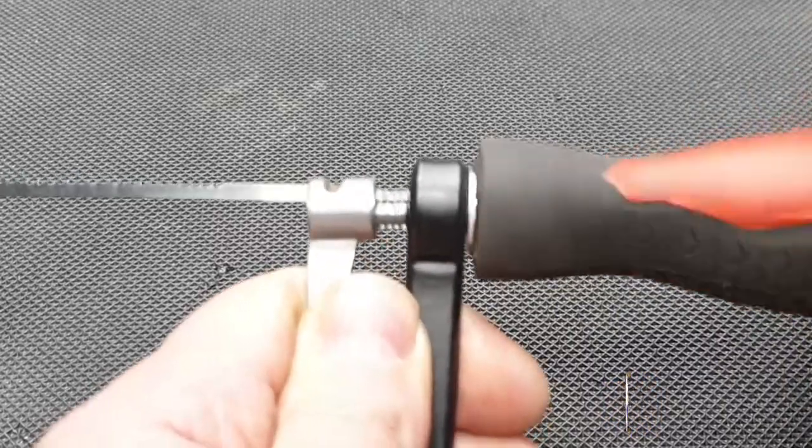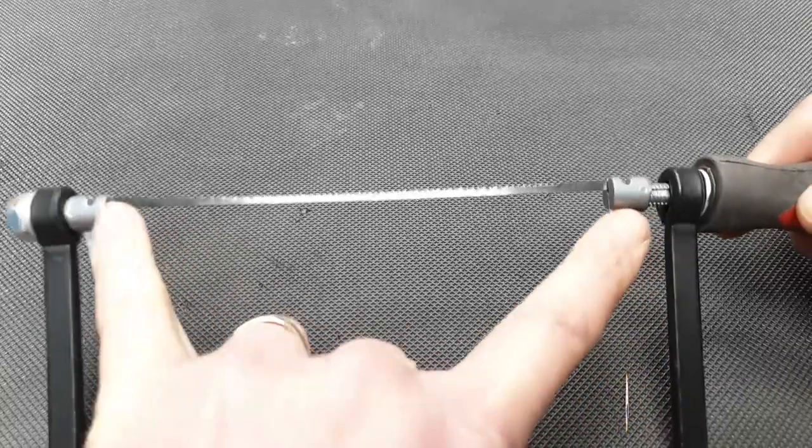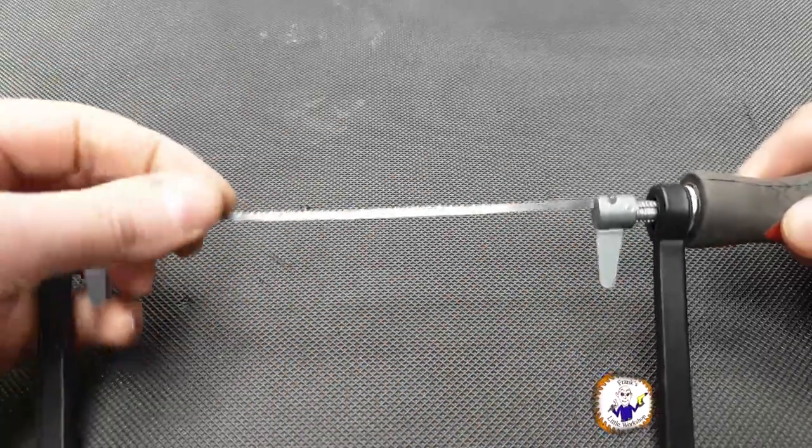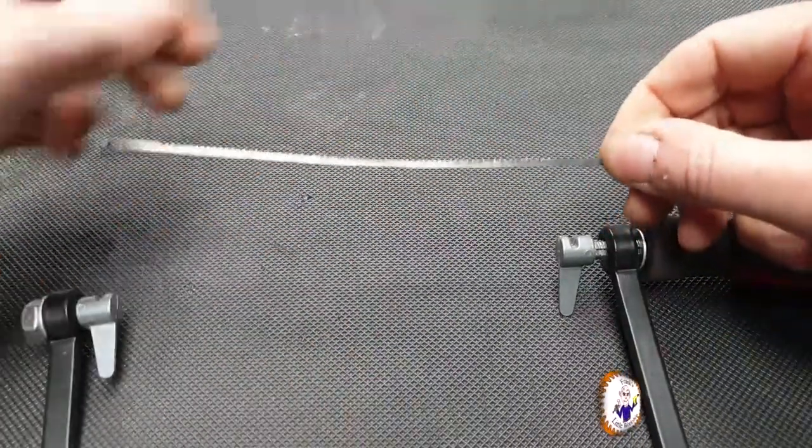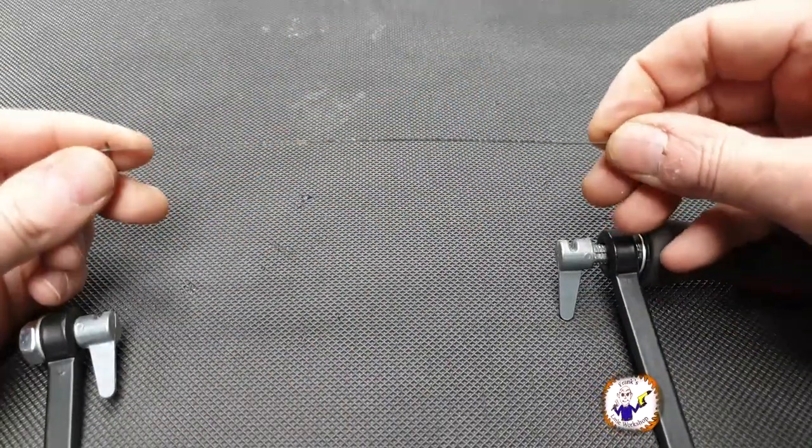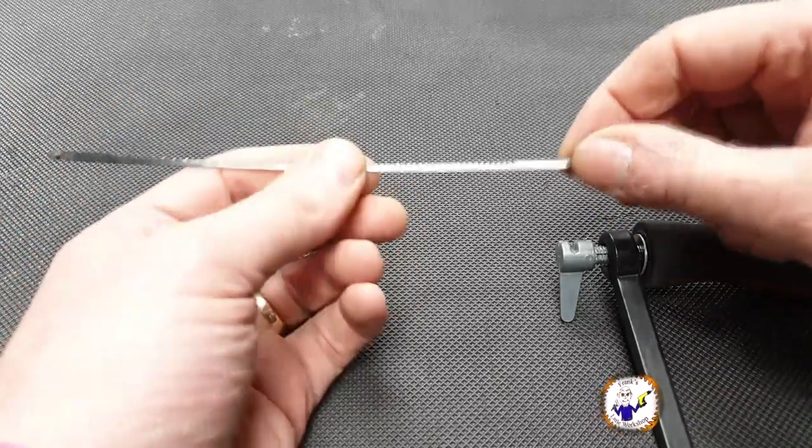What that does is basically changes this distance—it takes the tension off. You can see the threads appearing, which means the distance between here and here is getting shorter, which means the blade is then free to come out. Simple as that. This blade's a little bit bent, but that doesn't matter because once it's under the tension it straightens out again.